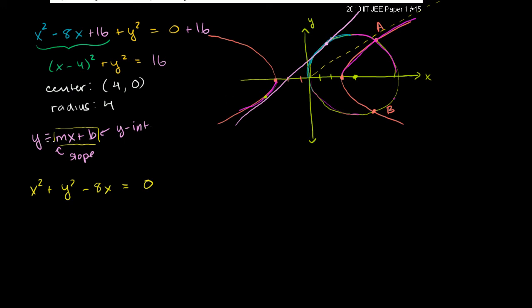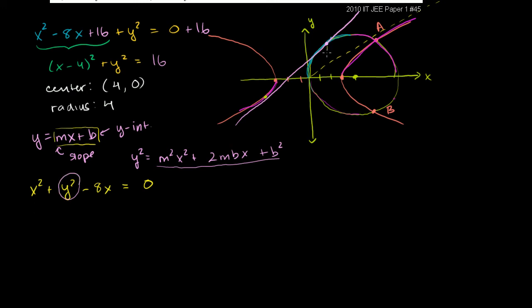To do that, let's substitute for y squared. If y equals mx plus b, we square that to get y squared equals m squared x squared plus 2mbx plus b squared. Now we can substitute this whole thing in for y squared, so the expression for the x-coordinate of our intersection is x squared plus m squared x squared plus 2mbx plus b squared minus 8x equals 0.